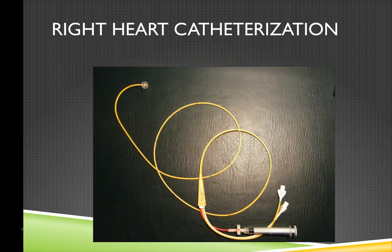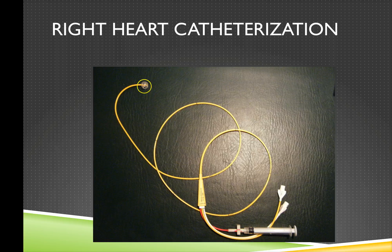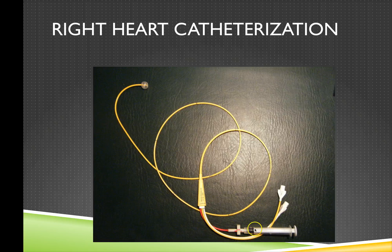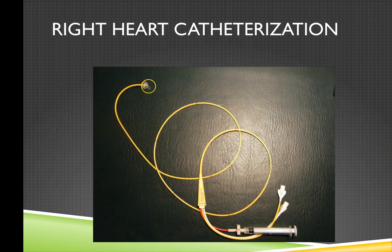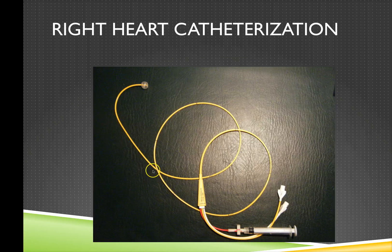This is a right heart catheter — in fact it's a Swan-Ganz catheter. It's a balloon-tipped catheter used to measure the pressure within the right side of the heart. The balloon tip is inflated using a syringe. In this particular catheter there are two ports: the distal port, which allows pressure transduction, withdrawal and introduction of fluid to the tip; and the proximal port, which in the case of measuring cardiac output by thermodilution methods allows us to introduce fluid.